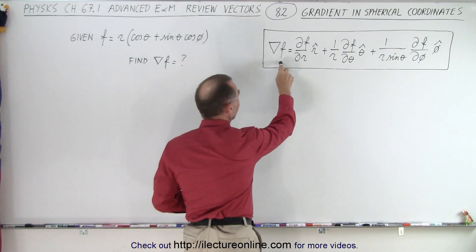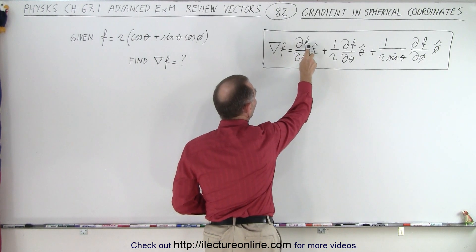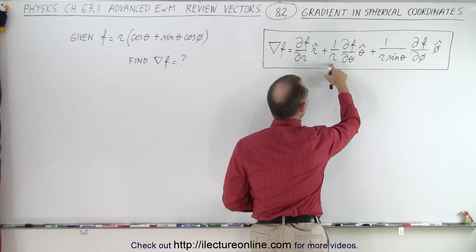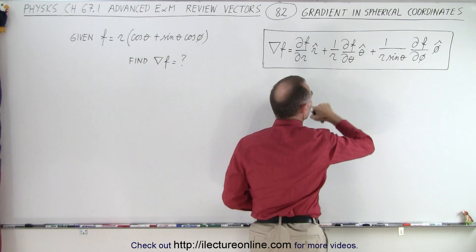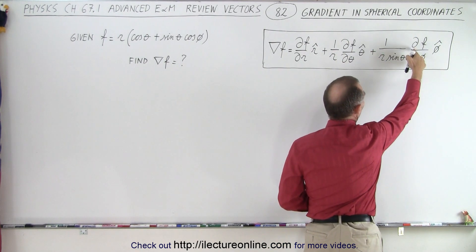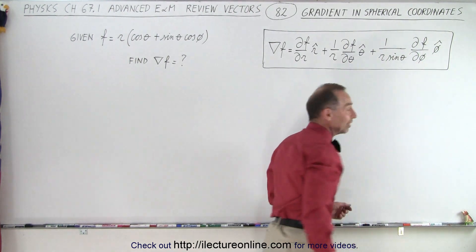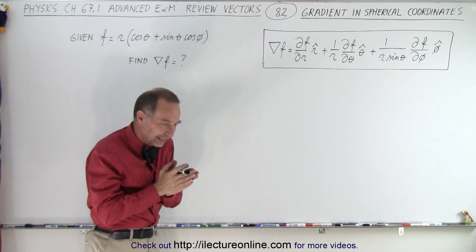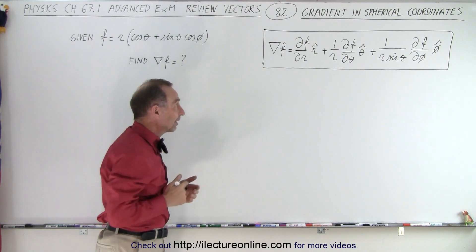You can see here that the gradient of a scalar function equals the partial derivative of the function with respect to r in the r direction, plus 1 over r times the partial derivative with respect to theta in the theta direction, plus 1 over r times the sine of theta times the partial derivative with respect to phi in the phi direction.